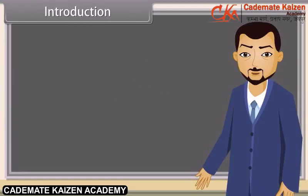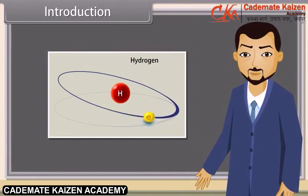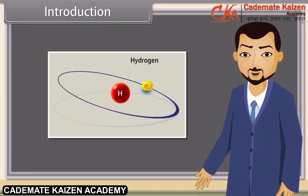Students, now we are going to know about the thing by which matter has been created. Can any one of you tell me the name of that particular thing? Yes, you, Raoul. Sir, it is atom. Absolutely right. Atom is the smallest thing by which matter is made. Now let us study further to know more about atom.